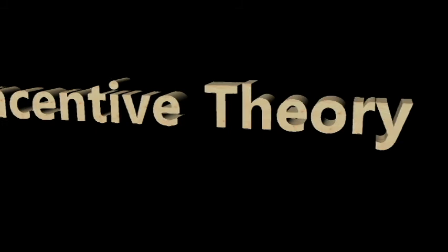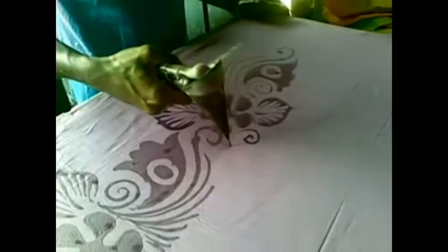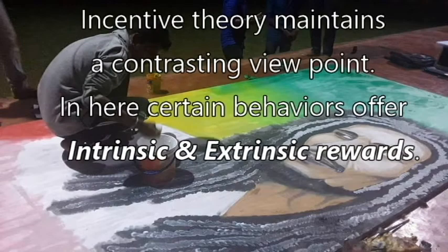Incentive theory maintains a contrasting viewpoint. Certain behaviors offer intrinsic rewards, meaning they are interesting and fun to do even when they produce no external benefits. By contrast, extrinsic rewards such as money, food, and public recognition produce satisfaction independently of the behaviors that produce them. Whereas extrinsically motivated behavior appears to be regulated by external events, intrinsically motivated behavior comes from within and the rewards are internal. Incentive theory argues that we are sufficiently motivated by goal attainment — it is unnecessary to propose that behavior is geared toward anything other than obtaining a specific reward.